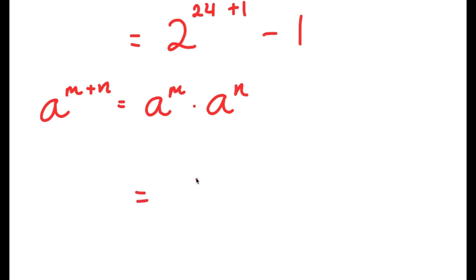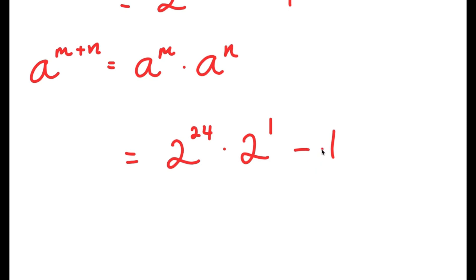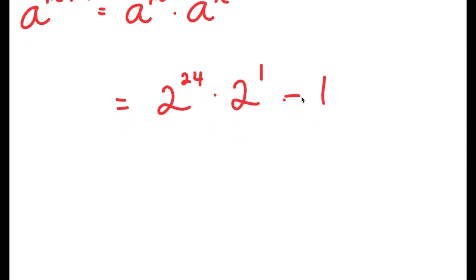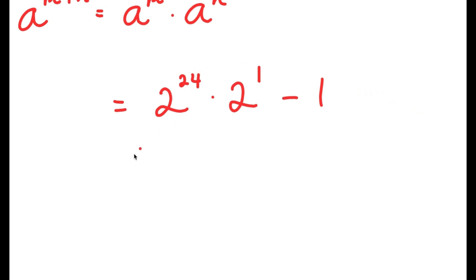So 2 to the power of 24 plus 1 is going to equal 2 to the power of 24 times 2 to the power of 1 minus 1. Basically, our goal throughout this video is to change our values to be as small as possible, so that at the end we can do whatever we need to do with them to get our final result.